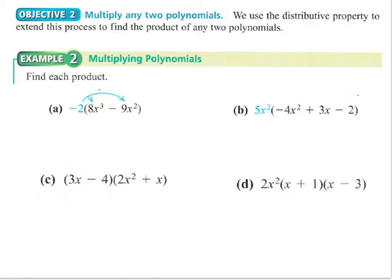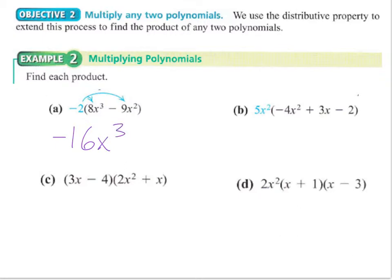Here we'll take a look at using the distributive property to find a couple of products, and I'll show you some different methods. In example a, we're multiplying negative 2 through, so we have to multiply it by both the 8x cubed and the 9x squared — the arrows there can help you remember to do that. Multiplying negative 2 by 8x cubed gives us negative 16x cubed, and then the two negatives cancel out so we get plus 18x squared.